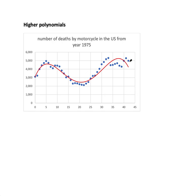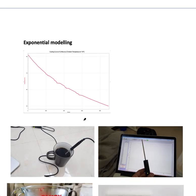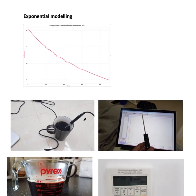Higher polynomials — if you can get data that curves in some way, you're on a winner. This is a quartic model of motorcycle deaths in the US. The deaths increased, reached a maximum, started to decrease for some reason, then started to increase again. You can find the maximums and minimums and then relate those dates to what was happening in real life — why has this happened? There's loads of opportunity for reflection and personal engagement.